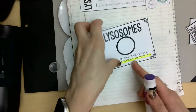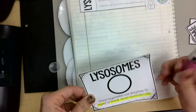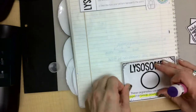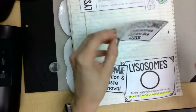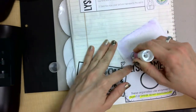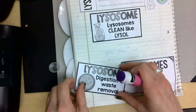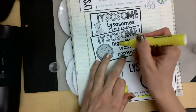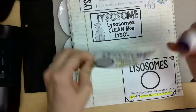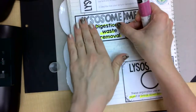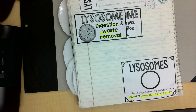Biomolecules — that just means molecules of life, so the things that are in our cell keeping us alive. In the bottom right corner we've got our two sheets. Lysosomes clean like Lysol — they clean up all the stuff we don't want anymore. The point is digestion and waste removal: they take out waste. Put that over here, like a little book.